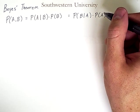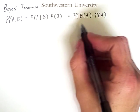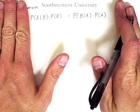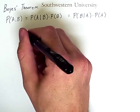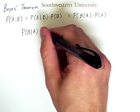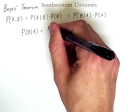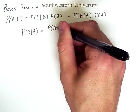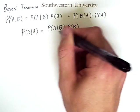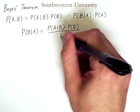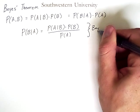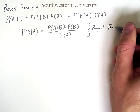So that's simple algebraic manipulation. Now, if we take this and move this probability of A over to the other side of this equation, then we get the following expression, which is the most common expression of Bayes' Theorem. The probability of B given A is equal to the probability of A given B multiplied by the probability of B all divided by the probability of A. So this is Bayes' Theorem.